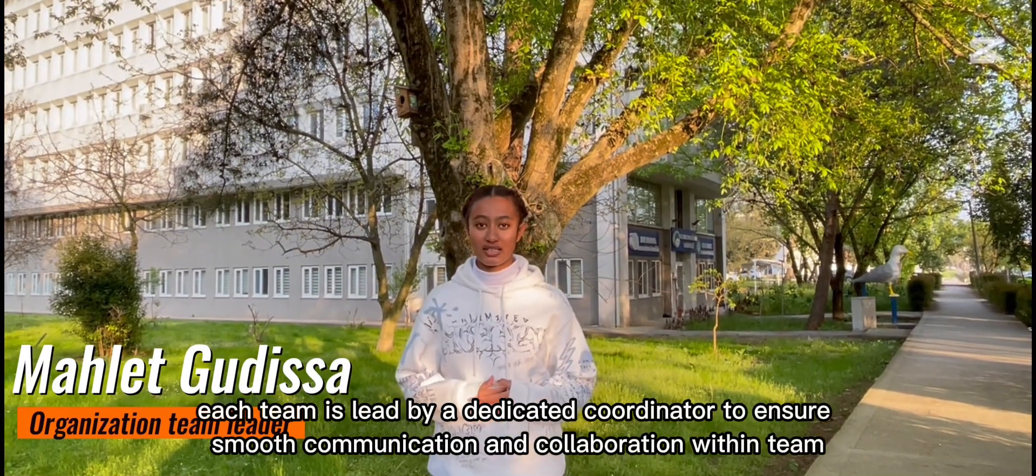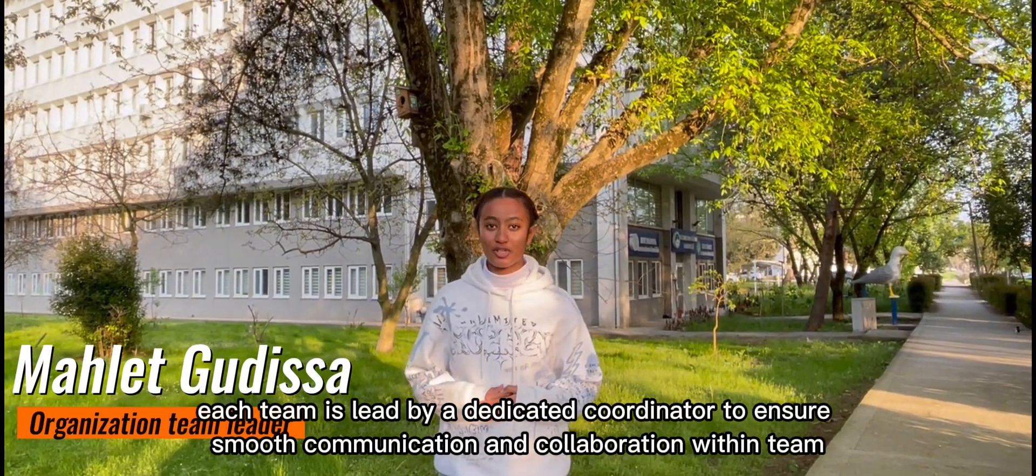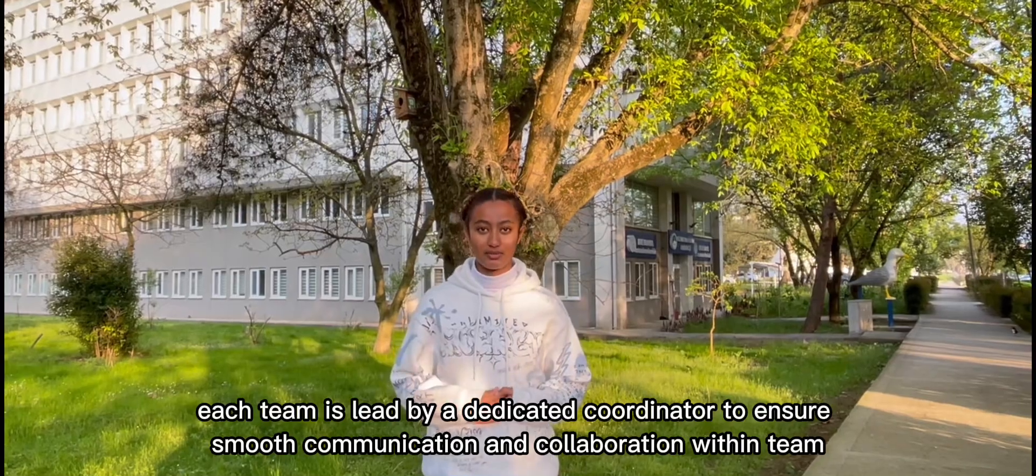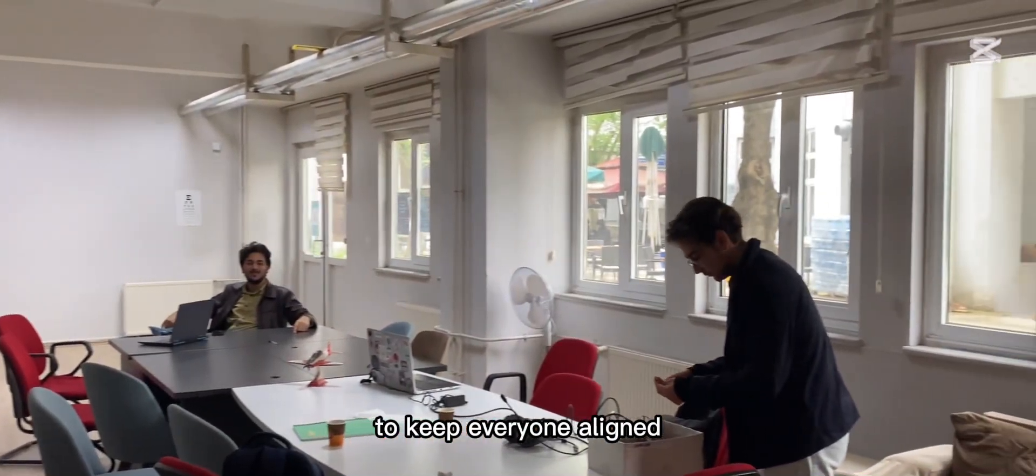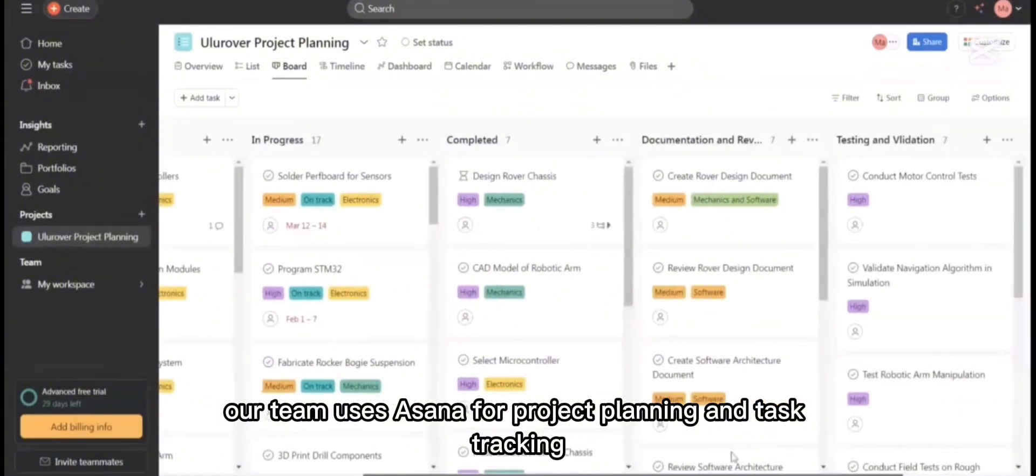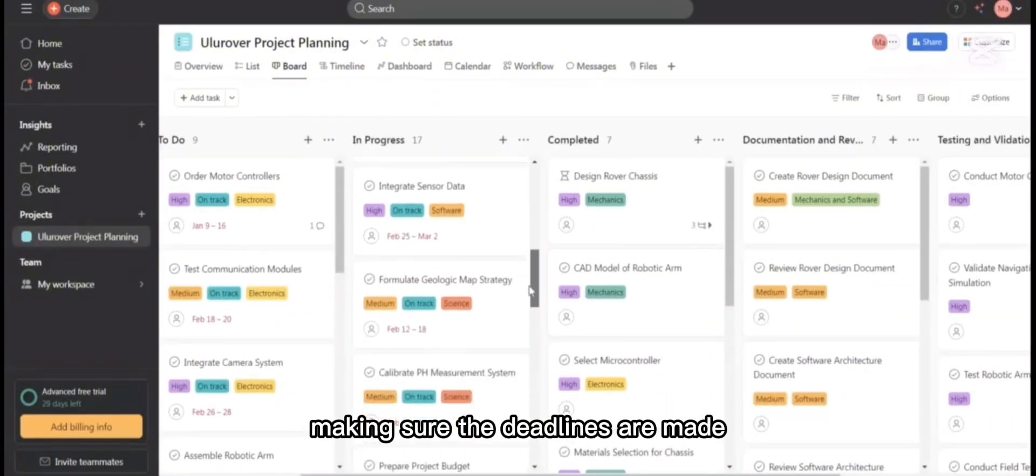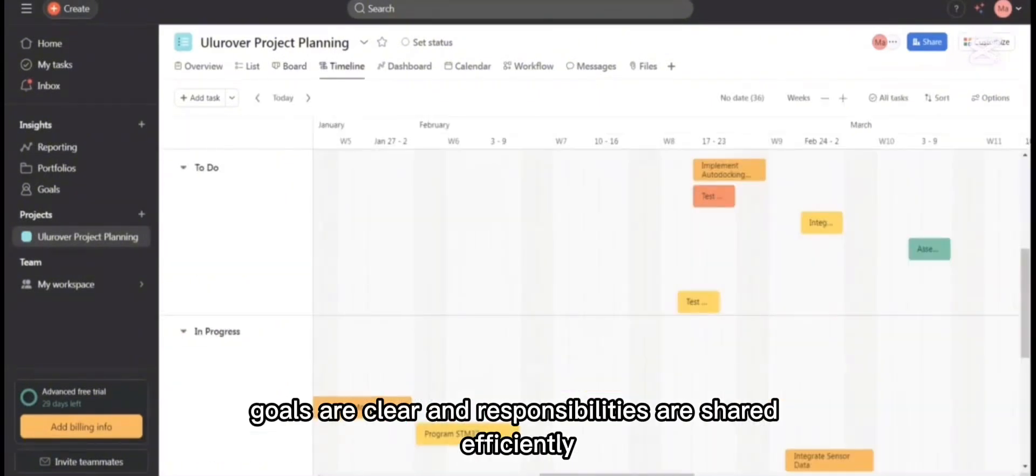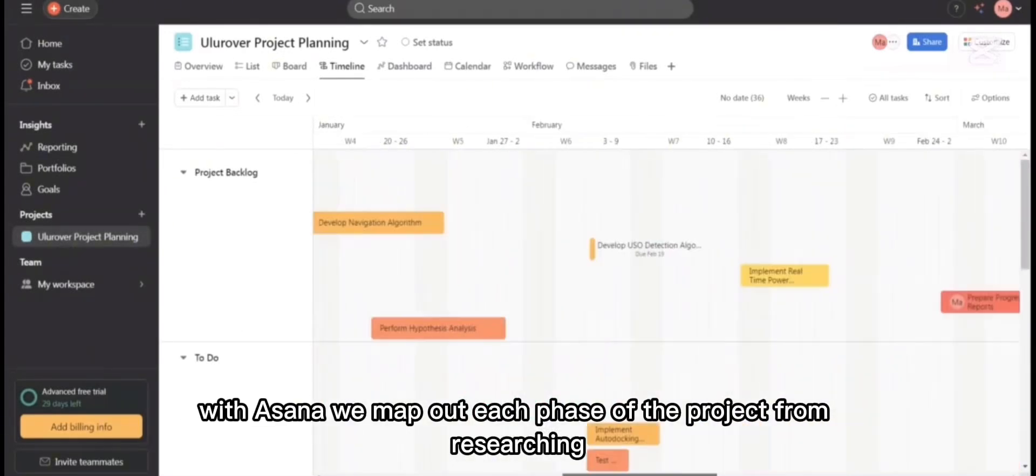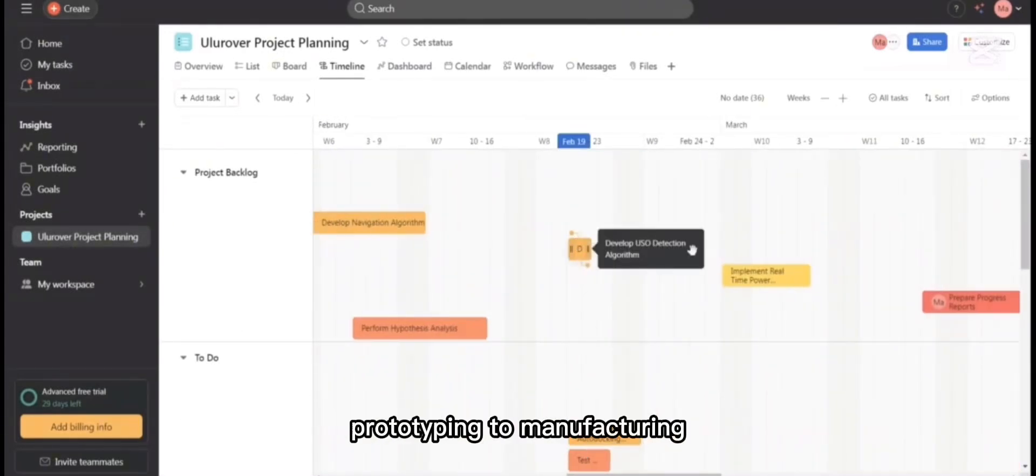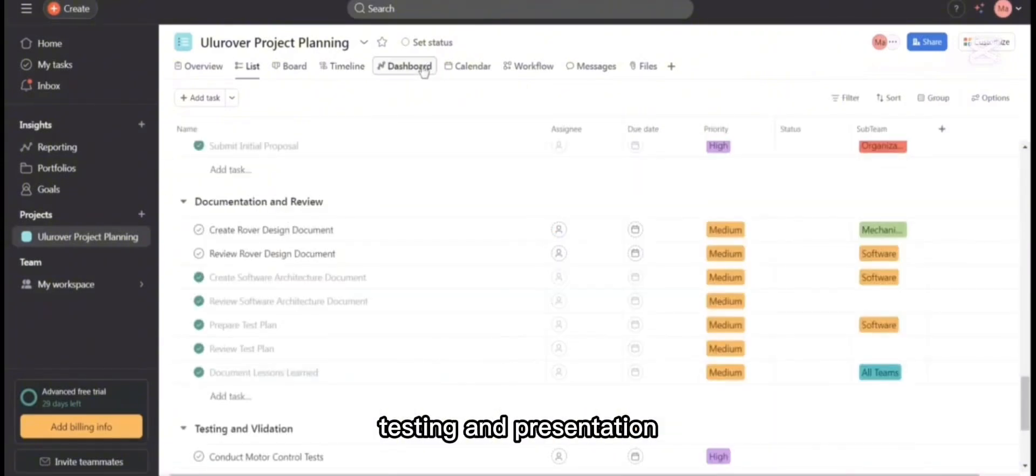Each team is led by a dedicated coordinator who ensures smooth communication and collaboration with the team. We hold weekly general meetings and regular department sessions to keep everyone in line. Our team uses Asana for project planning and task tracking, making sure deadlines are met, goals are clear and responsibilities are shared efficiently. With Asana, we map out each phase of the project from research and prototyping to manufacturing, testing and presentation.